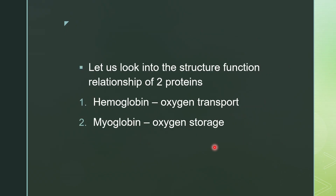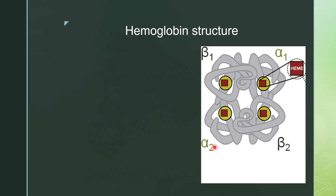Let us try to understand the structure-function relationship of two proteins. First is hemoglobin, whose function is to transport oxygen, and the second is myoglobin, whose function is for storage of oxygen. With respect to oxygen, we will try to understand the function of hemoglobin and myoglobin.